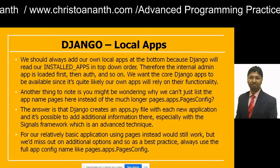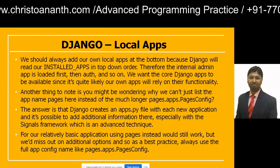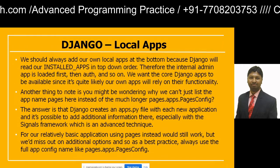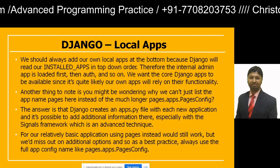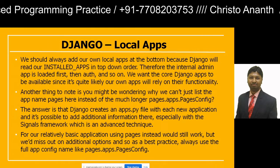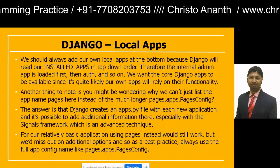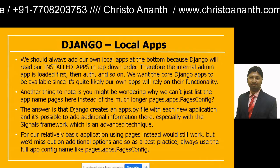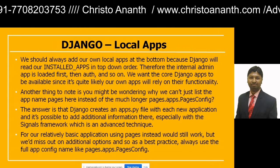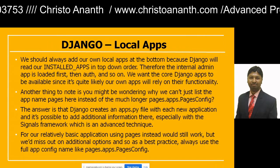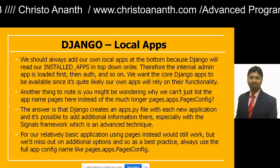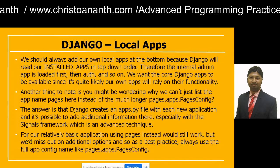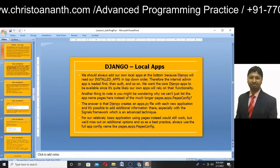Django creates an apps.py file with each new application, and you can add additional information there. We cannot just list the app name 'pages' — we use the much longer pages.apps.PagesConfig so that we can also create new apps properly. The installed apps are given first preference because of their core functionality features.